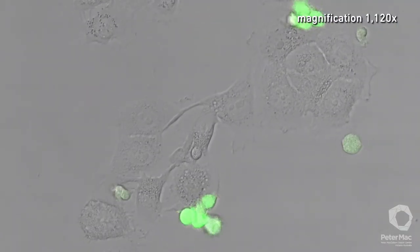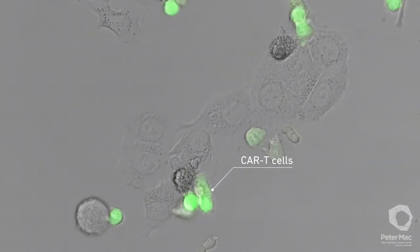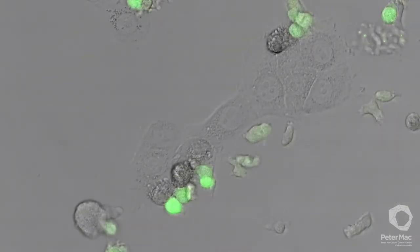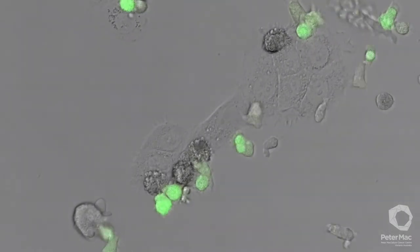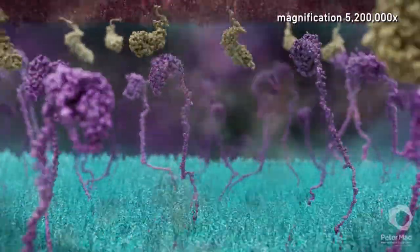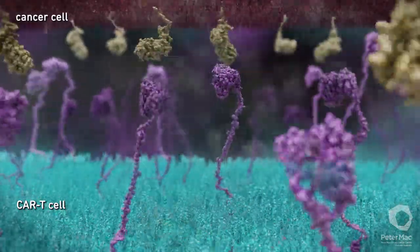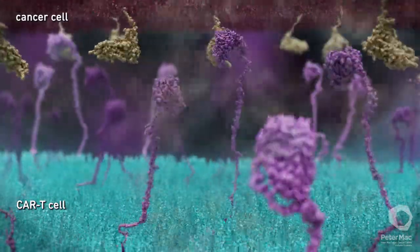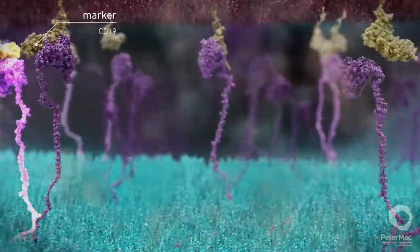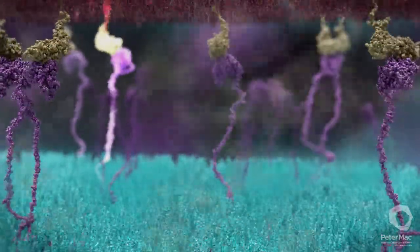Here we can see some green CAR T cells through a microscope. Once they are in the body, the special receptors enable the CAR T cells to seek out and recognize the patient's cancer cells. We are now looking at the magnified surface of a CAR T cell in contact with a cancer cell. The CARs can directly bind to specific markers on the patient's cancer cells, shown in yellow, overcoming the need for MHC1 to be present.